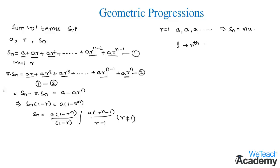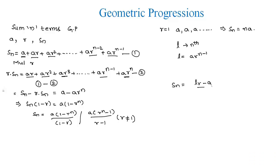Now, if we consider l as the nth term, then the last term is l equals ar to the power n minus 1. We then have the formula to find the sum of n terms of a geometric progression as: Sn equals lr minus a, divided by r minus 1. These are the formulas to find the sum of n terms of a geometric progression.